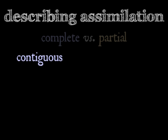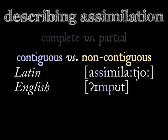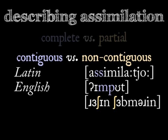Are the two sounds side by side? We'll call that contiguous assimilation. Are they more distant from each other — not adjacent? That's non-contiguous. The two examples I've given both involved contiguous phonemes. If my tongue gets twisted and I accidentally say 'Russian submarine' for 'Russian submarine,' the assimilation is non-contiguous.